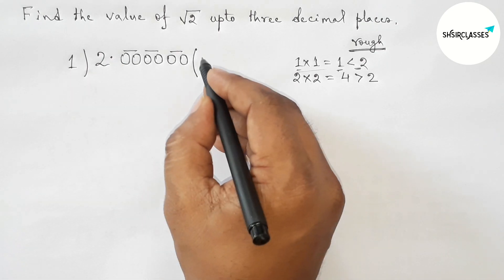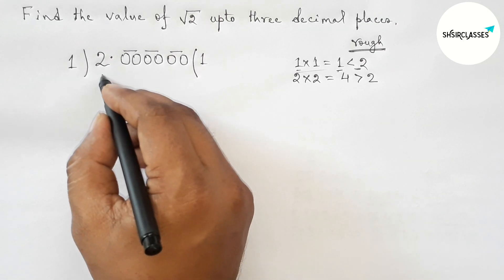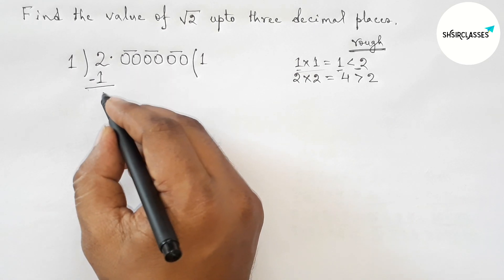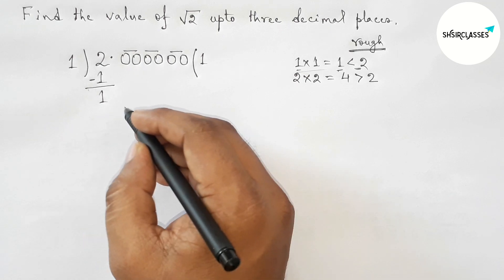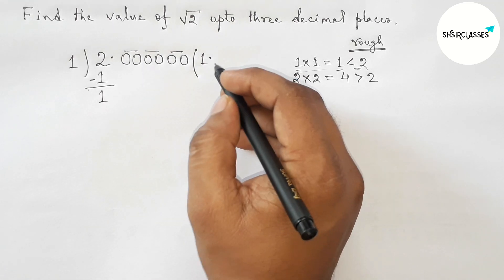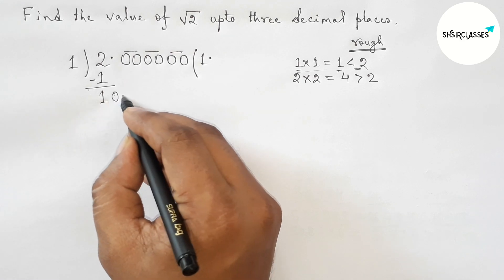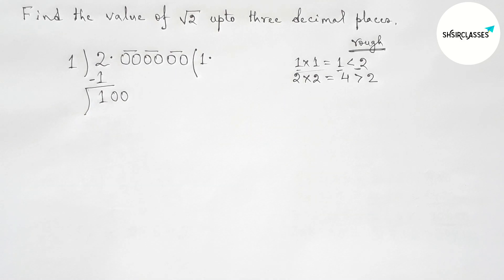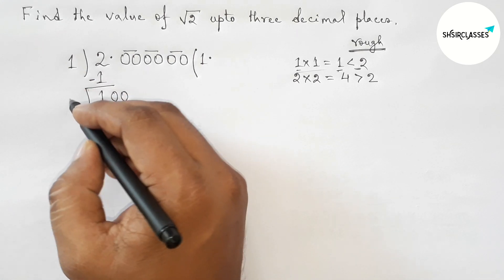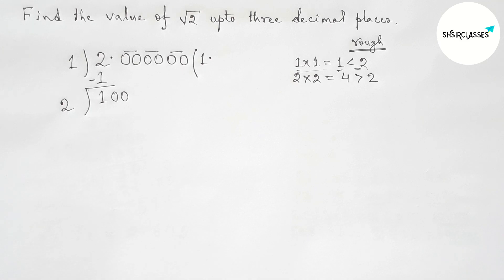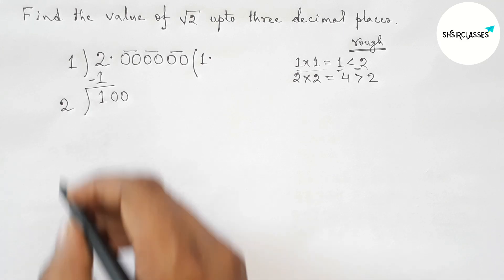Now 1 times 1 equals 1. Subtracting: 2 minus 1 equals 1, and the decimal point goes here. Bring down the first pair of zeros. Draw a division line. Take double of 1, which is 2.